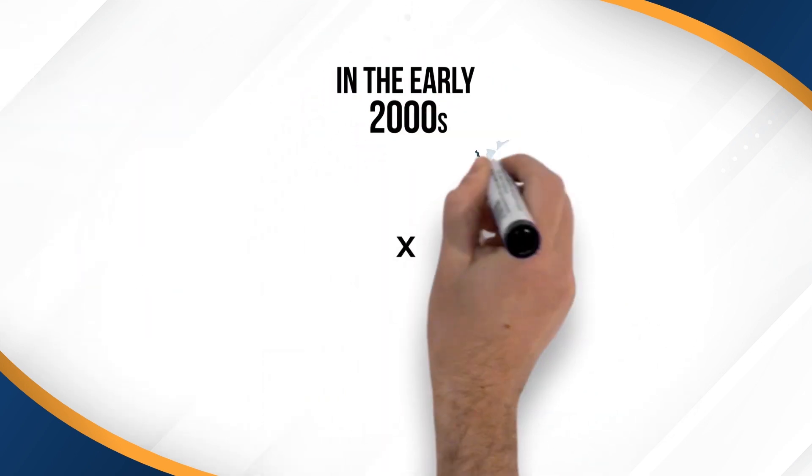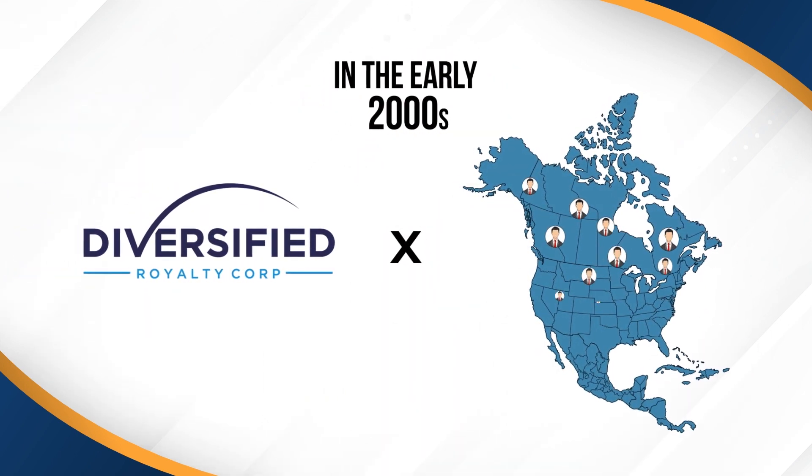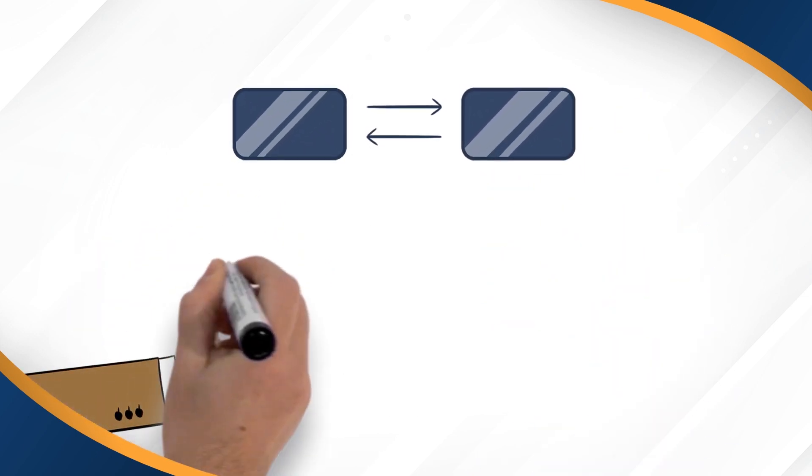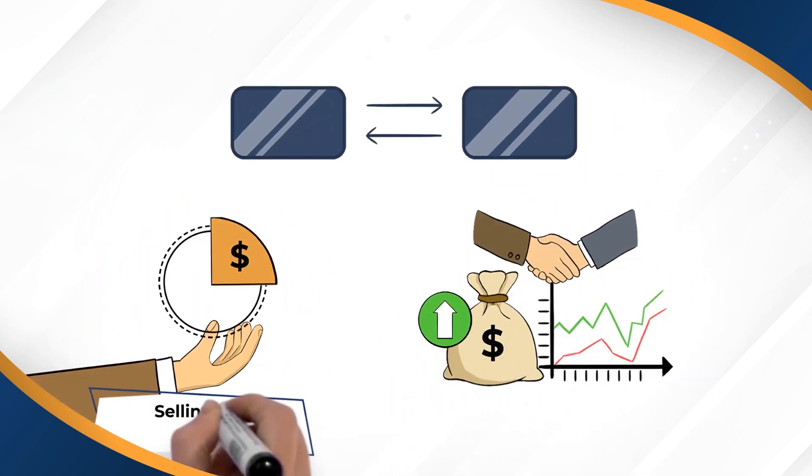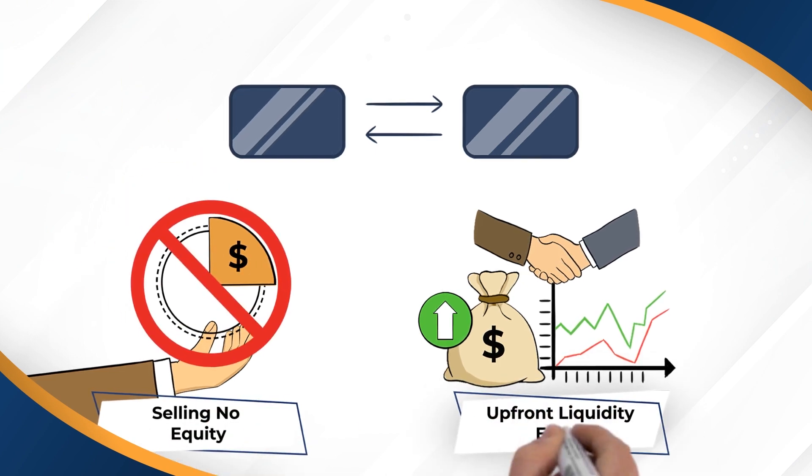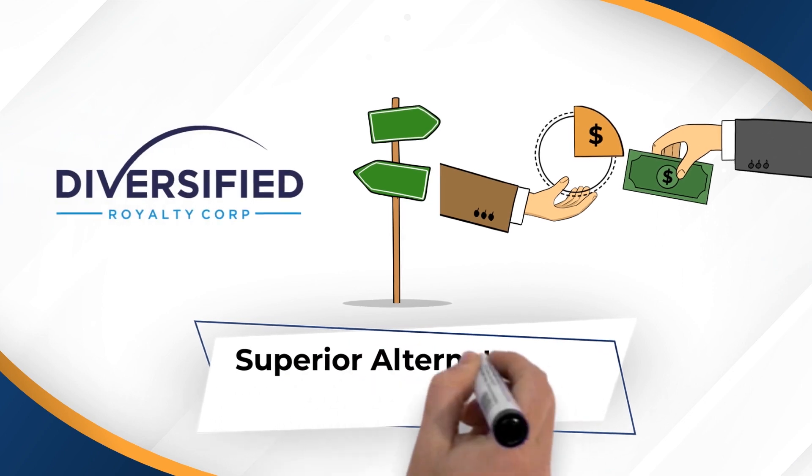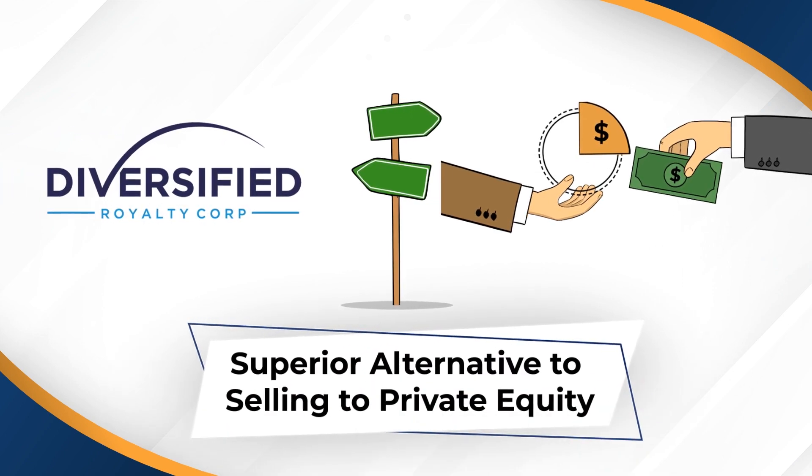In the early 2000s, the Diversified Royalty Corp team, along with several of North America's best franchisors, invented a unique royalty transaction that generates a meaningful upfront liquidity event while selling no equity, providing the owners of these great businesses a far superior alternative to selling to private equity.